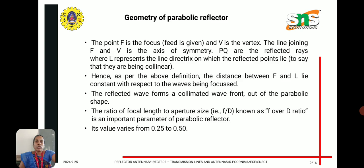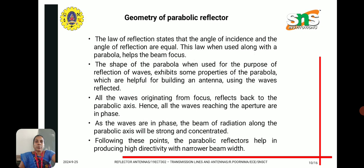The distance between F and L remains constant with respect to the waves being focused. The ratio of the focal length to the aperture size is known as the F-over-D ratio, which varies from 0.25 to 0.5. The law of reflection states that the angle of incidence and angle of reflection are equal. This law, used along with the parabola, helps to focus the beam. All waves originating from the focus reflect back parallel to the parabolic axis, so all waves reaching the aperture are in phase. This produces a strong, concentrated beam with high directivity and a narrower beamwidth.